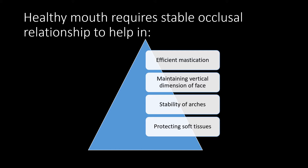What does a healthy mouth require? It requires a stable occlusal relationship to help in efficient mastication. We need our teeth to eat, so we require stable occlusal relationship for efficient mastication. Then, to maintain the vertical dimension of the face. It provides stability to the arches. And it protects the soft tissues — which means our tongue, our gingiva, the buccal mucosa, and all those things.